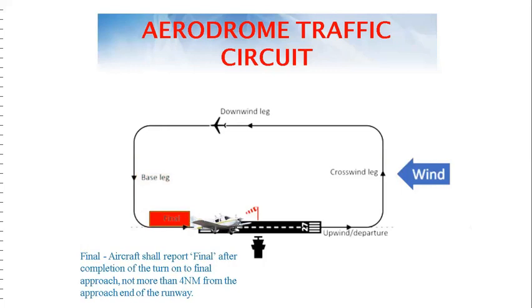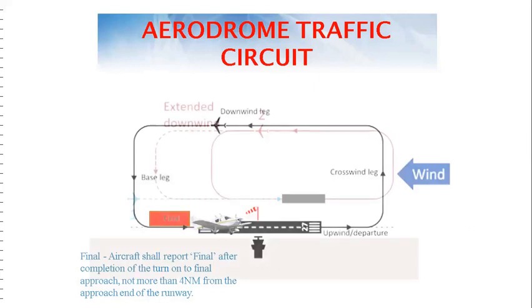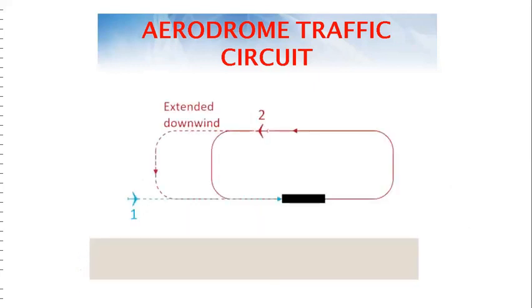Final leg is where the aircraft is lined up with the runway and is getting ready for touchdown. Aircraft shall report final after completion of the turn onto the final approach, not more than four nautical miles from the approach end of the runway. There is a provision for extension of downwind.